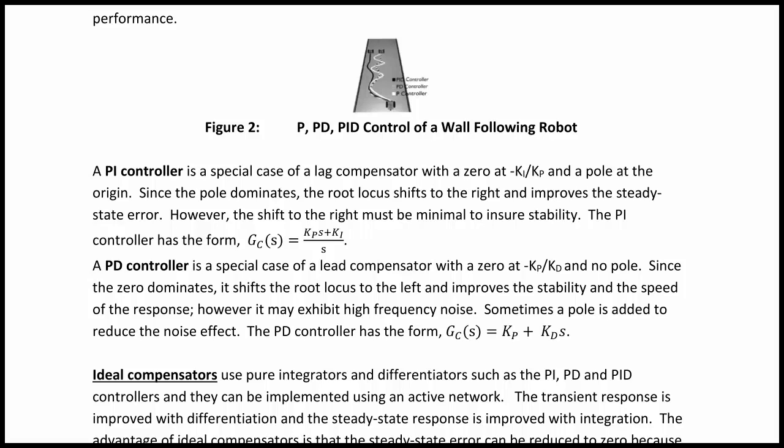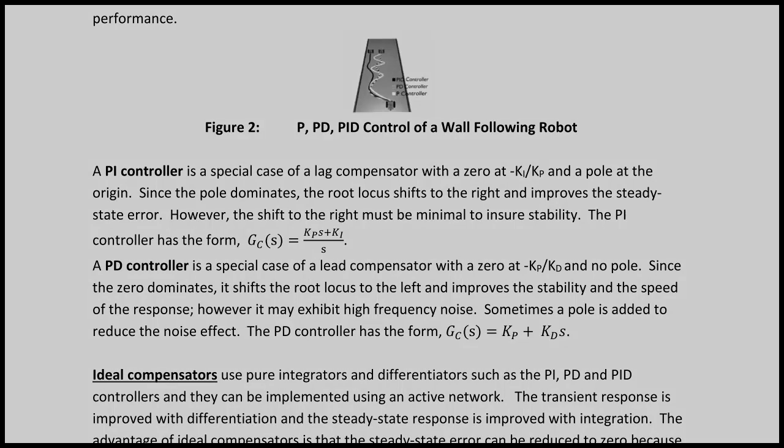A PD controller is a special case of a lead compensator with a zero at -kp/kd and no pole. Since the zero dominates, it shifts the root locus to the left and improves the stability and the speed of the response; however, it may exhibit high-frequency noise. Sometimes a pole is added to reduce the noise effect. The PD controller has the form gc(s) = kp + kd*s, which is similar to the lead compensator designed at the beginning of this lecture.